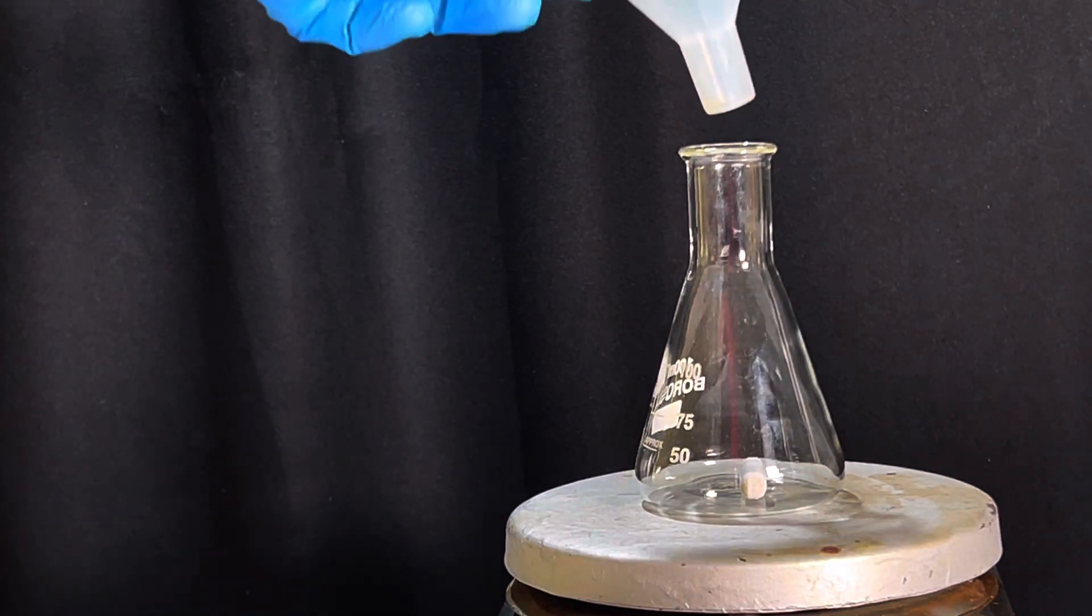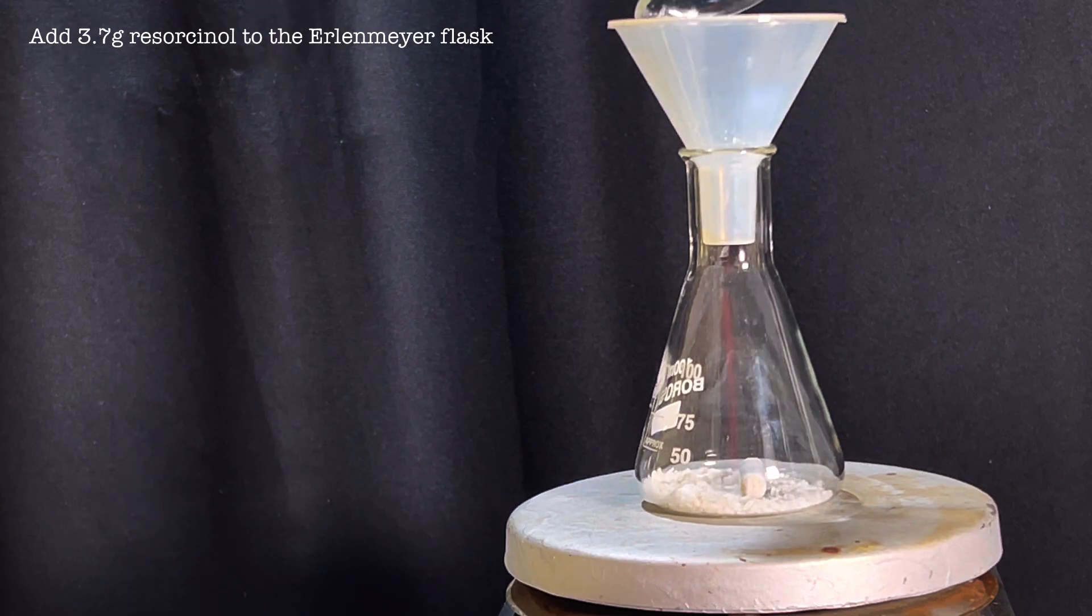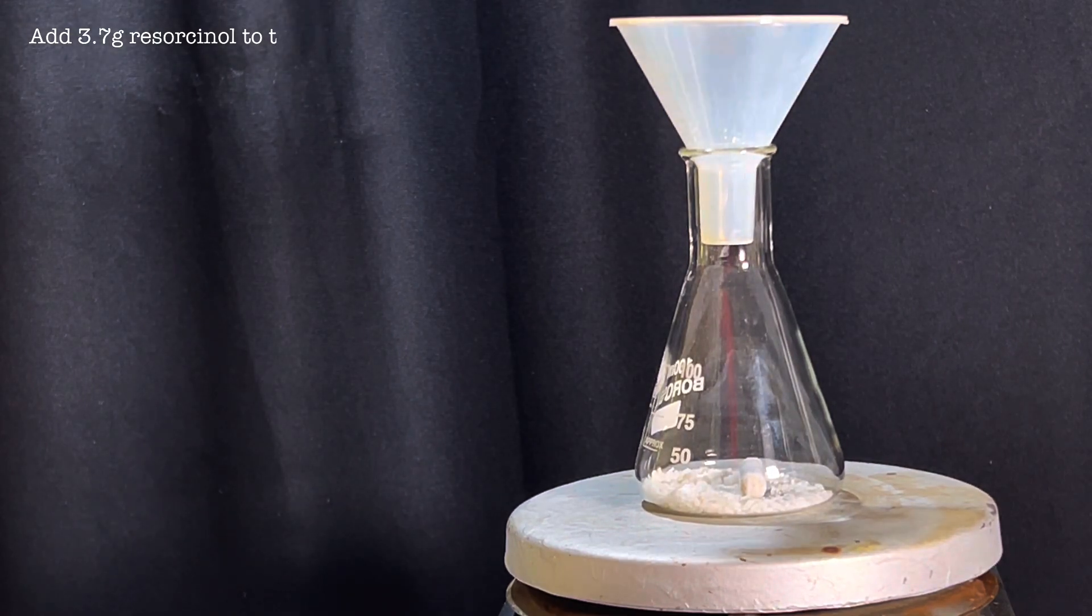Meanwhile, a 100 ml Erlenmeyer flask is taken and 3.7 grams of resorcinol was added to the flask using a powder funnel.